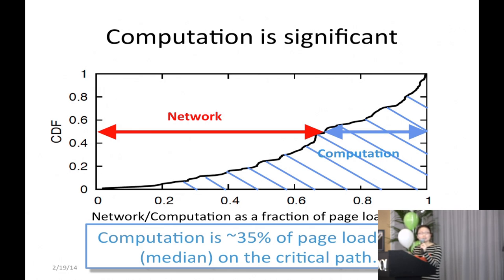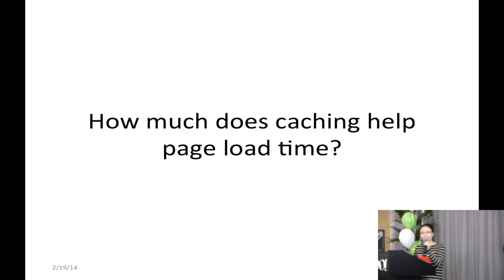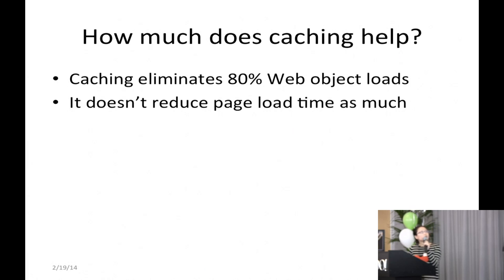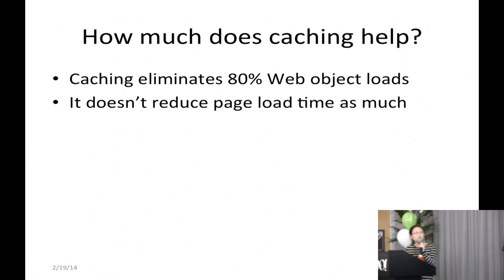Our result shows that in the median case, computation is as much as 35% of page load time on the critical path — meaning computation cannot be ignored. This also tells us that protocols like SPDY can only help the network portion, not the computational portion. Another question is how much caching helps page load time. We load a page with cleared cache, then immediately load it again. We find that caching eliminates 80% of web object loads — which is a lot. However, it doesn't reduce page load time as much, because caching only eliminates 40% of web object loads on the critical path. Caching objects that are off the critical path doesn't help page load time.